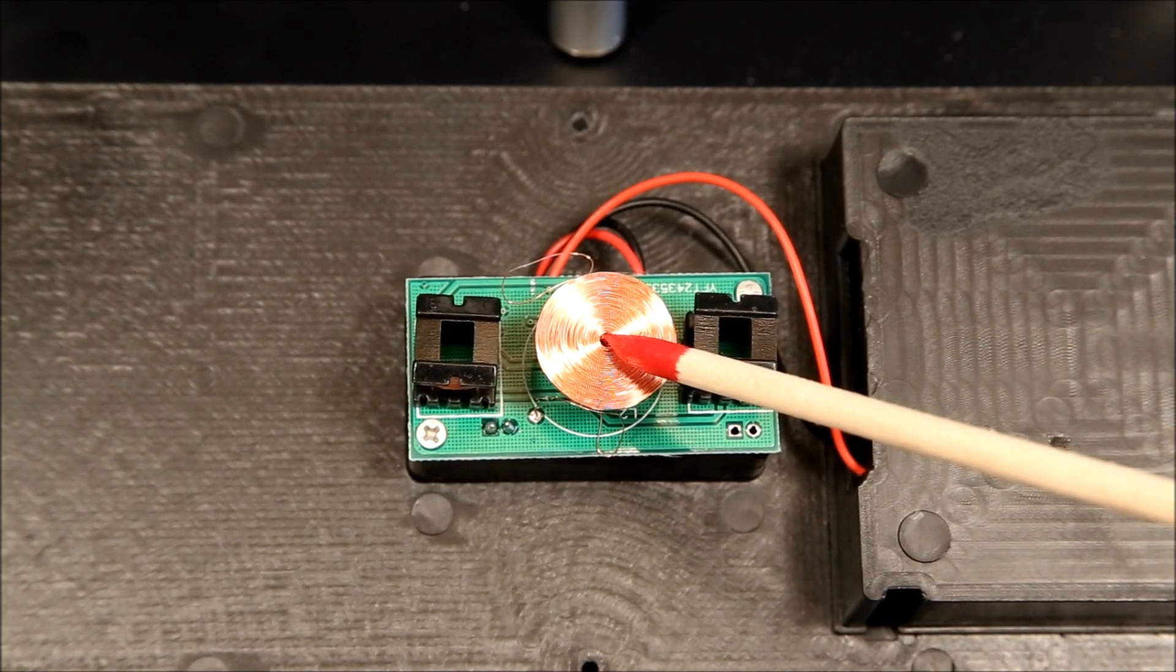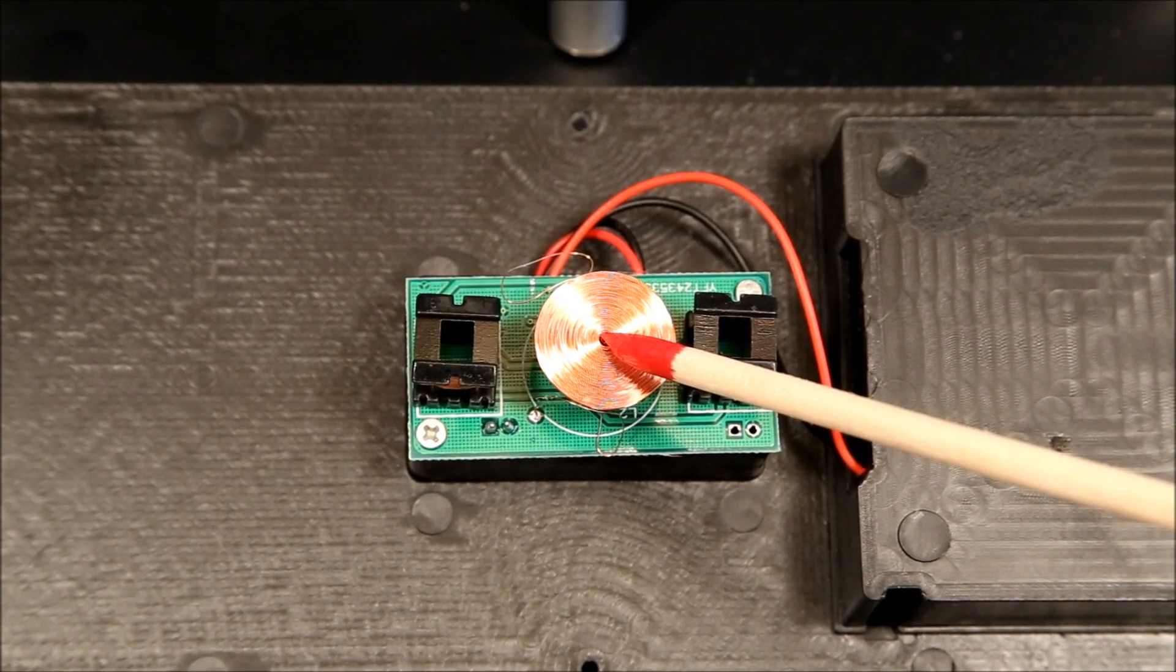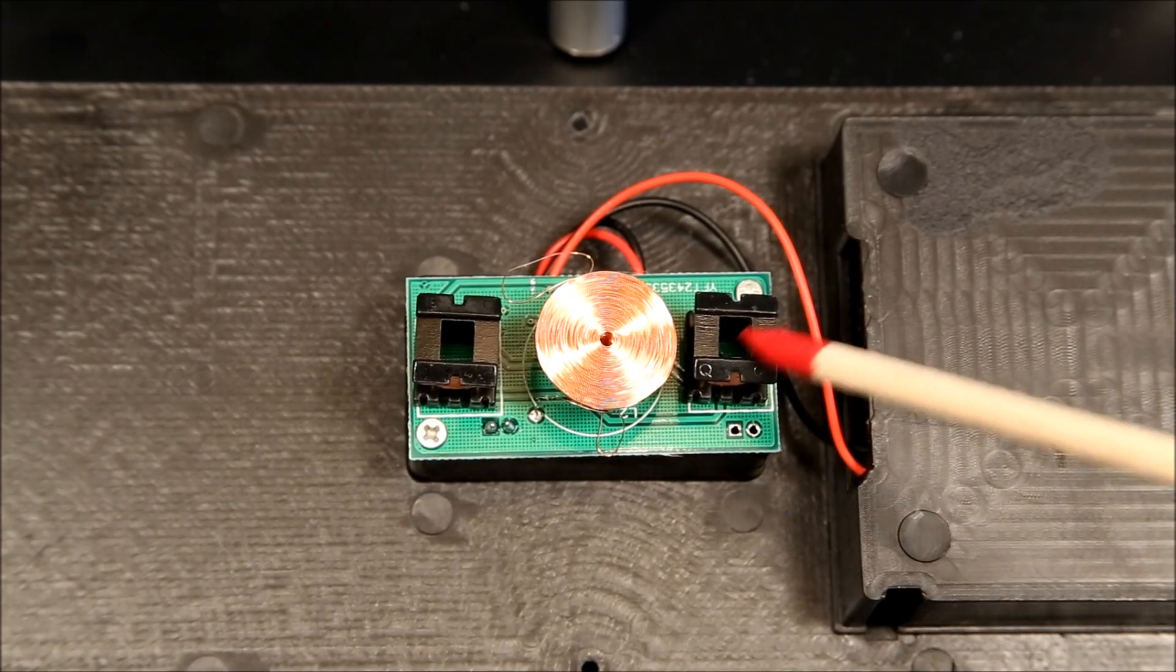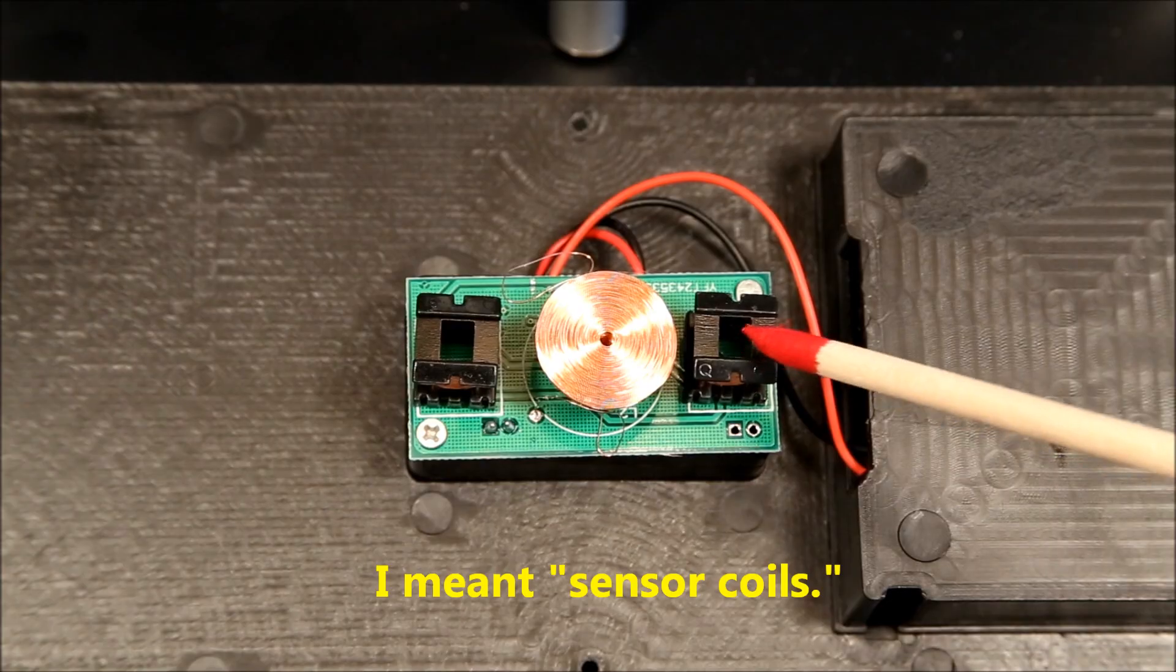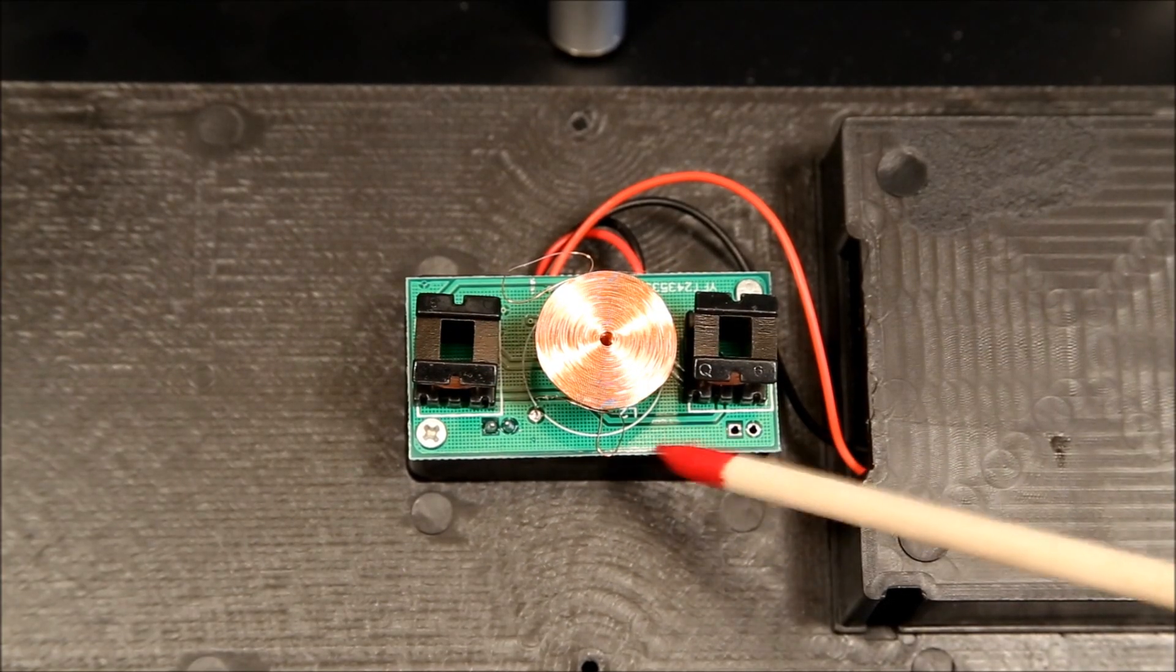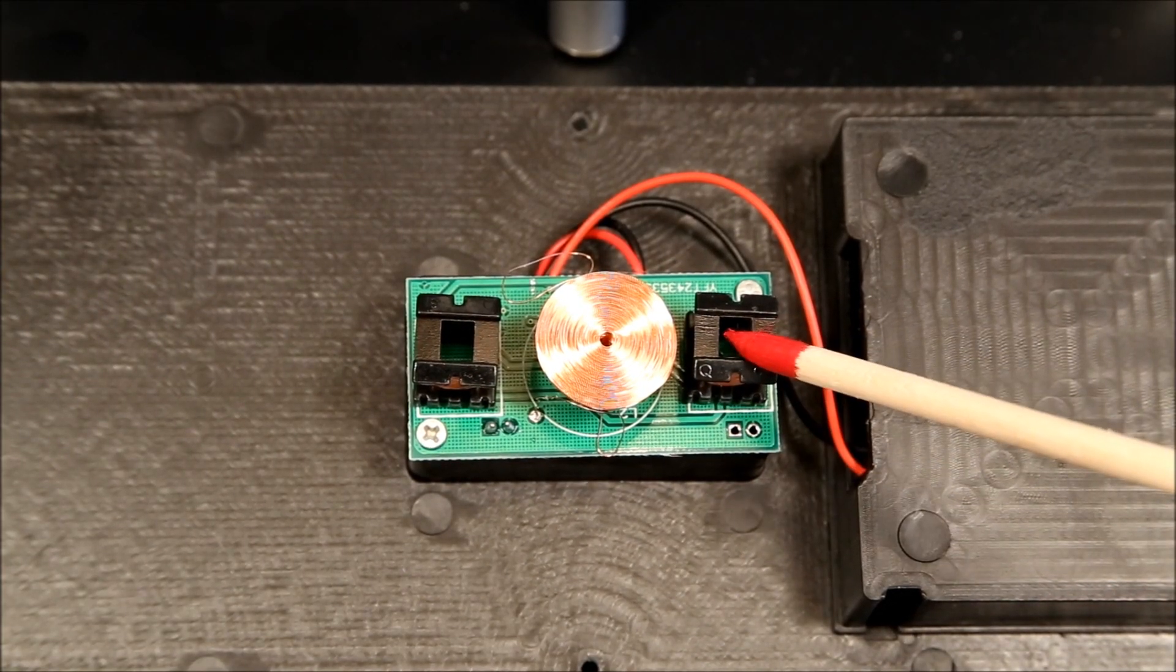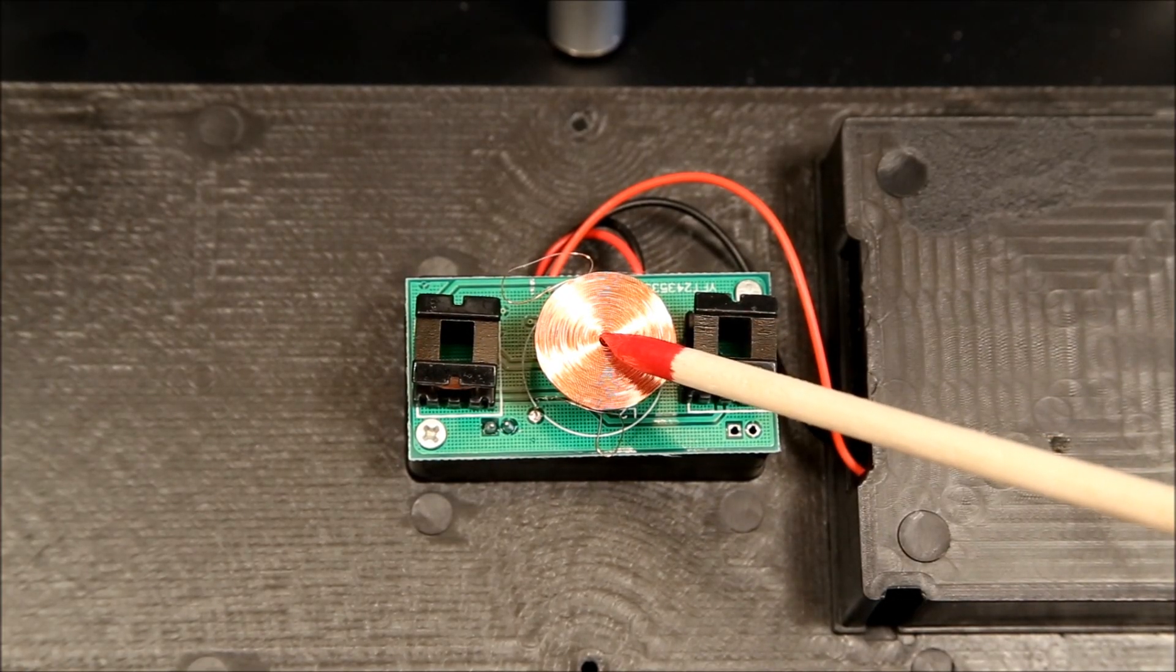This is what keeps the pendulum moving. What prevents it from spinning out of control are these two sensor magnets. Because the magnetic field is sensed by one before the other, circuitry in the base can calculate its velocity and determine if this center magnet needs to be pulsed or not.